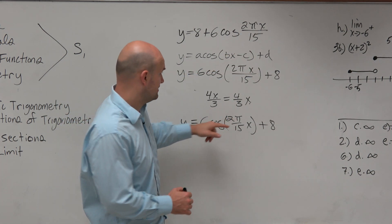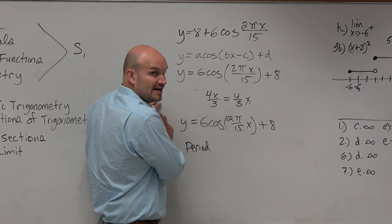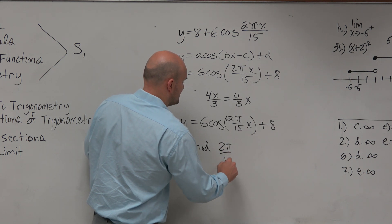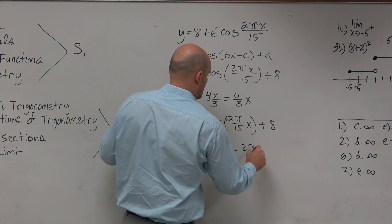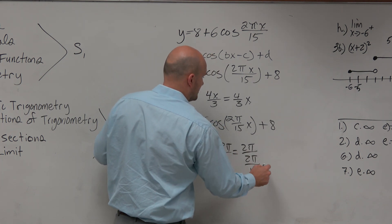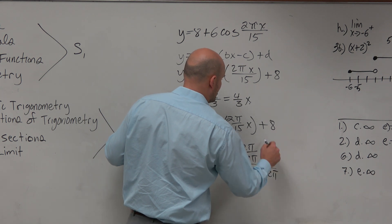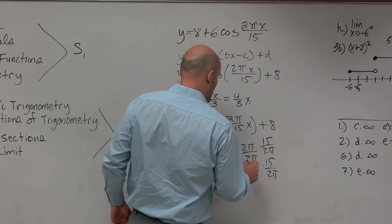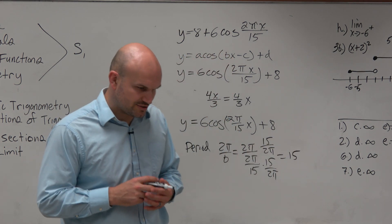That is our b. And remember, the period of cosine or sine is going to be 2 pi divided by b. Well, b in this case is 2 pi over 15. Multiply by the reciprocal on the top and the bottom, and we get an answer of 15.